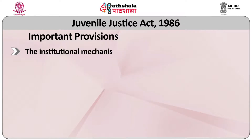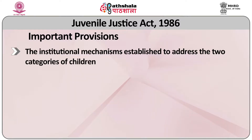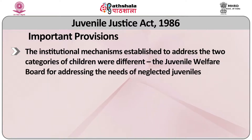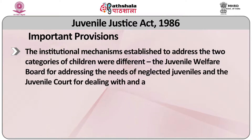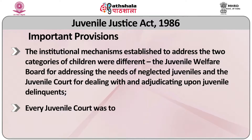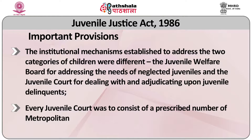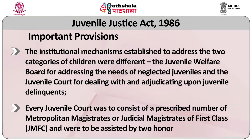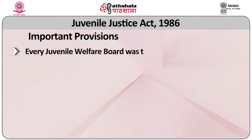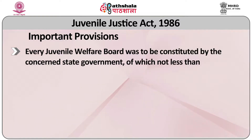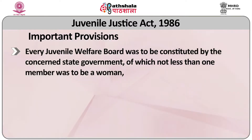Sixth, the institutional mechanisms established under the 1986 act to address the two categories of children were different: the juvenile welfare board for addressing the needs of neglected juveniles, and the juvenile court for dealing with and adjudicating upon juvenile delinquents. Seventh, every juvenile court was to consist of a prescribed number of metropolitan magistrates or judicial magistrates of first class, called JMFC, assisted by two honorary social workers. Eighth, every juvenile welfare board was to be constituted by the concerned state government, of which not less than one member was to be a woman.